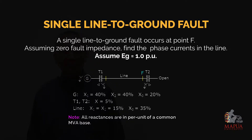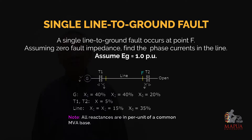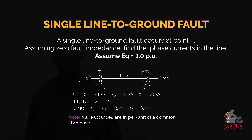These are the given data. For the generator: the positive sequence reactance is 40%, the negative sequence reactance is 40%, and the zero sequence reactance is 20%. For transformers T1 and T2, the reactance is 5% each. For the transmission line, the positive and negative sequence reactance is 15%, and the zero sequence reactance is 35%. Note that all reactances are in per unit on a common MVA base.